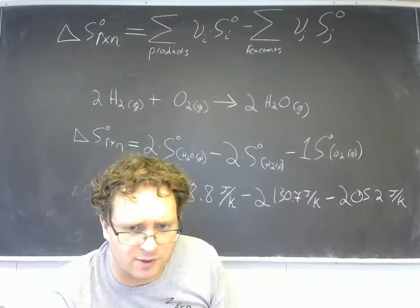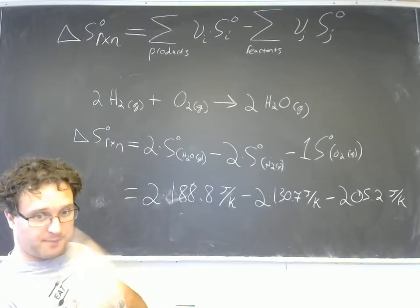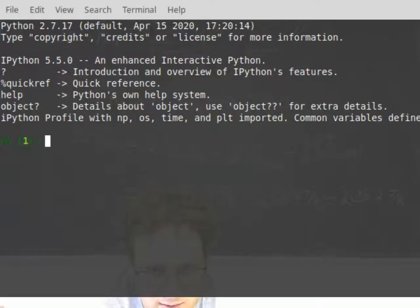Let's go ahead and calculate it now. We have 2 times 188.8 minus 2 times 130.7 minus 205.2. And I get negative 89.0 joules per kelvin.